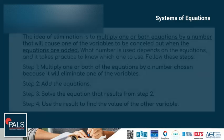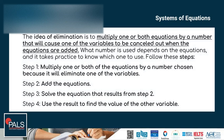The idea of elimination is to multiply one or both equations by a number that will cause one of the variables to be cancelled out when the equations are added. What number is used depends on the equation, and it takes practice to know which one to use. Follow these steps. Step 1: multiply one or both of the equations by a number chosen because it will eliminate one of the variables.